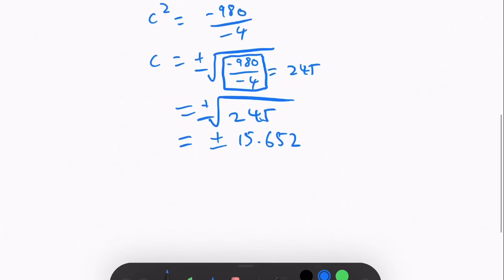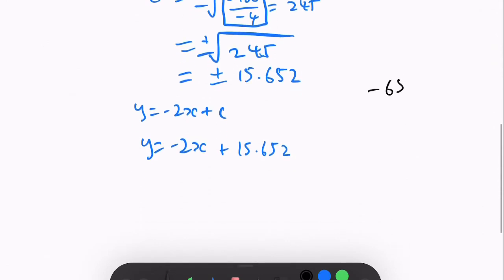Now, we can substitute c with 15.652 in our formula, y equals minus 2x plus c, we put y equals minus 2x plus 15.652.